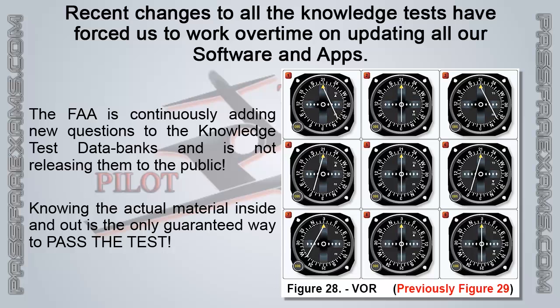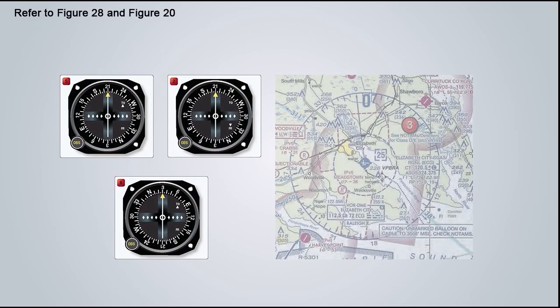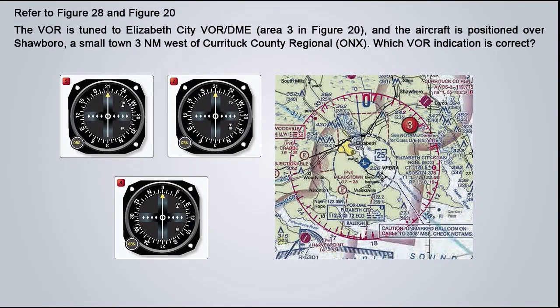If you're having trouble with these new VOR questions, here is a video covering all of the latest known FAA private pilot questions involving figure 28. For example, this new question says: refer to figure 28 and figure 20. The VOR is tuned to Elizabeth City VOR/DME, area 3 in figure 20, and the aircraft is positioned over Showboro, a small town three nautical miles west of Currituck County Regional, ONX. Which VOR indication is correct — 5, 2, or 8? Using our method of interpreting VORs, we will start checking each of the three given VORs to see which one matches the position reported by the question.